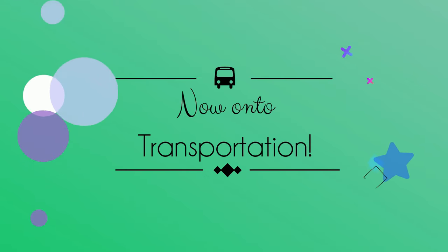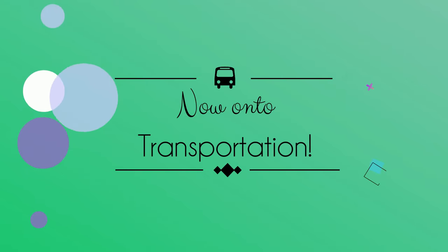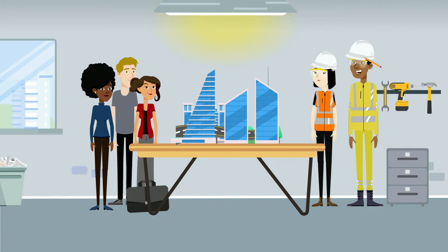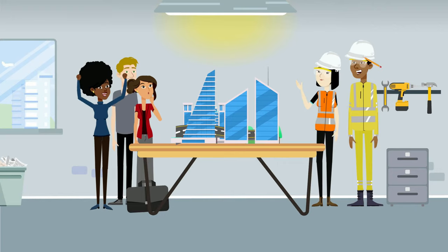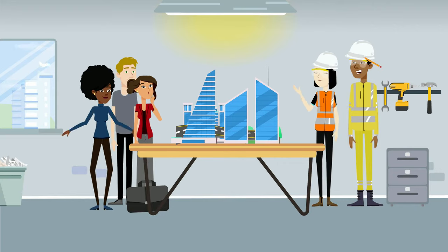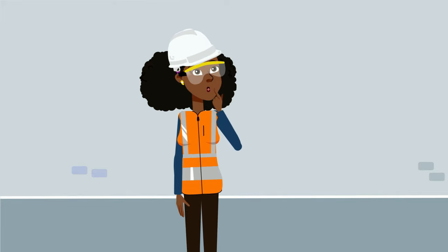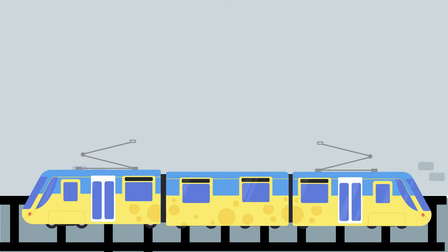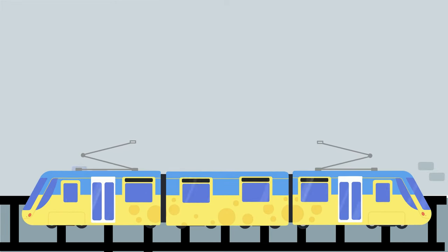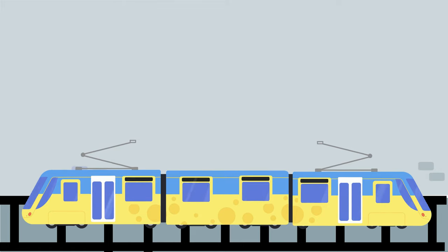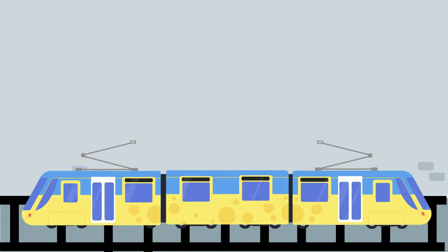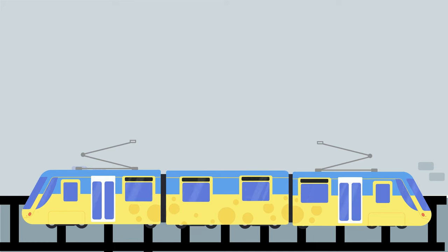Now onto transportation. Land can also be used for transportation. Roads and railways need to be made to allow people to move around communities and countries easily. Where do the roads and railways go? On land!